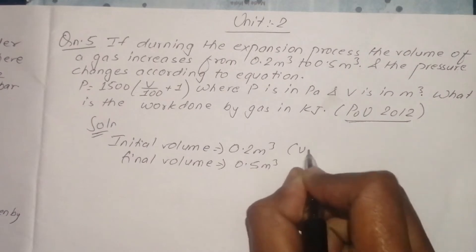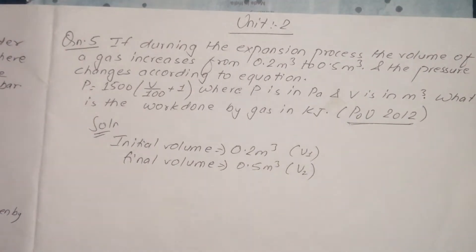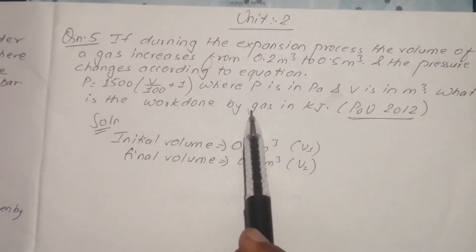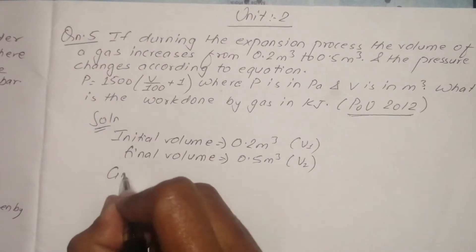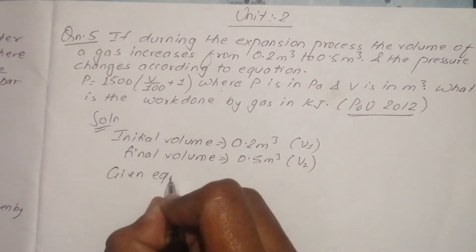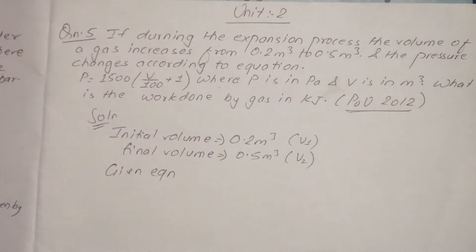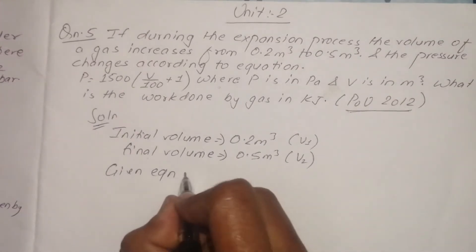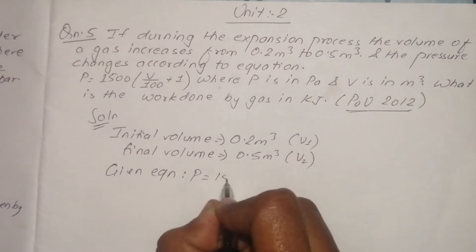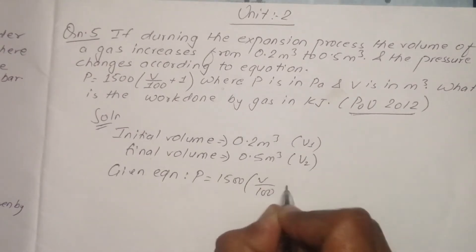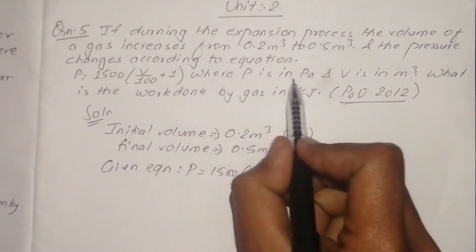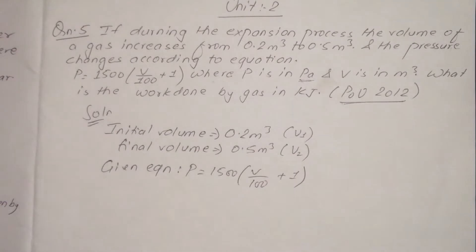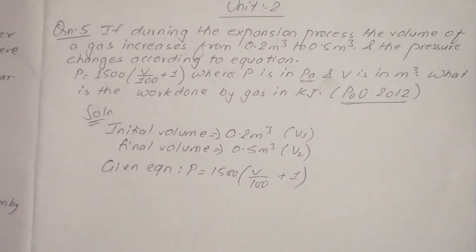The pressure changes during the process. The pressure equation is given as: P = 500/V + 1, where V goes from 0.2 to 0.5 meter cube.